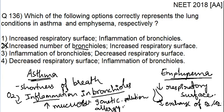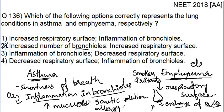Emphysema generally occurs in people who are smokers or who frequently come in contact with irritants. When they come in contact with irritants very frequently, it destroys the alveoli, so the exchange of gaseous material will not happen effectively. It also damages the elastic nature of the lungs. When the elastic nature of the lungs is destroyed, the lung will not be able to expand properly, resulting in a decreased respiratory surface.